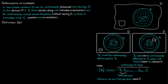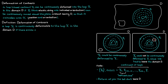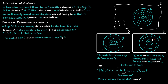We can formalize everything into the following definition. A loop gamma zero is said to be continuously deformable to the loop gamma one in the domain D if there exists a function that is continuous for S values between zero and one and T values between zero and one, and satisfies three conditions: for each S value, the function parameterizes a loop gamma S in domain D; for S equal to zero, it parameterizes gamma zero; and for S equal to one, it parameterizes gamma one.